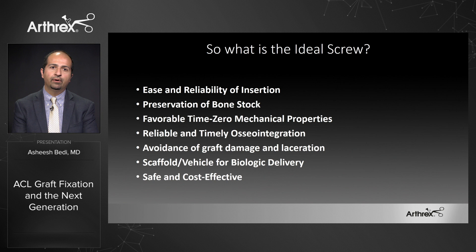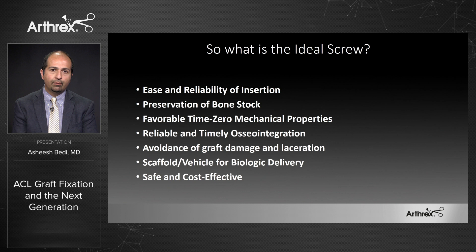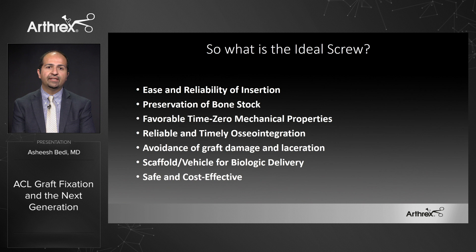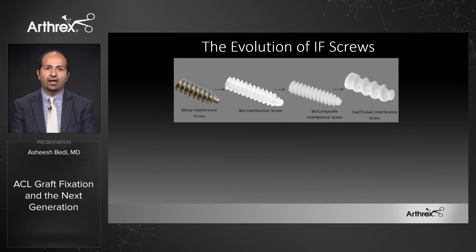What is the ideal interference screw? These are the principles I look for: we want it to be easy and reliable with good bone stock, as strong as possible on the day we do it in the OR. Ideally we want the screw to hang around long enough for time-zero biomechanical strength but also reliably become part of the bone without a foreign body reaction. We want to avoid damaging our graft, potentially deliver biological augments, and have it be safe and cost-effective.